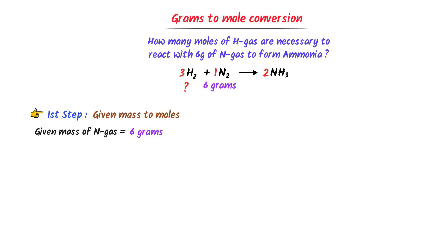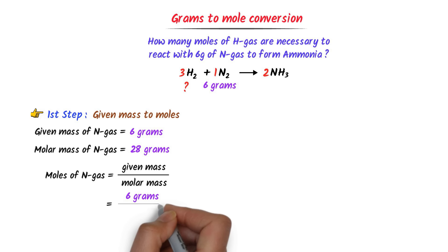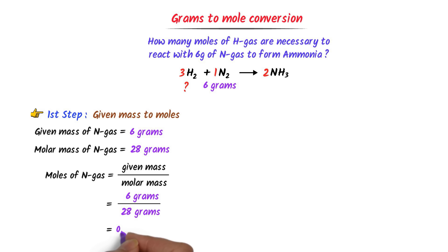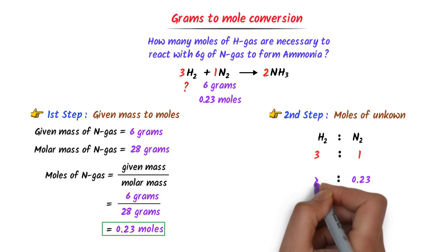Using the formula: number of moles = given mass ÷ molar mass = 6 ÷ 28 = 0.23 moles of nitrogen gas. So 6 grams, or 0.23 moles, of nitrogen gas react with x moles. In the second step, I find the number of moles of the unknown species, hydrogen gas. I establish the ratio between H₂ and N₂, which is 3:1. We know that 0.23 moles of nitrogen gas react with x moles of hydrogen gas.